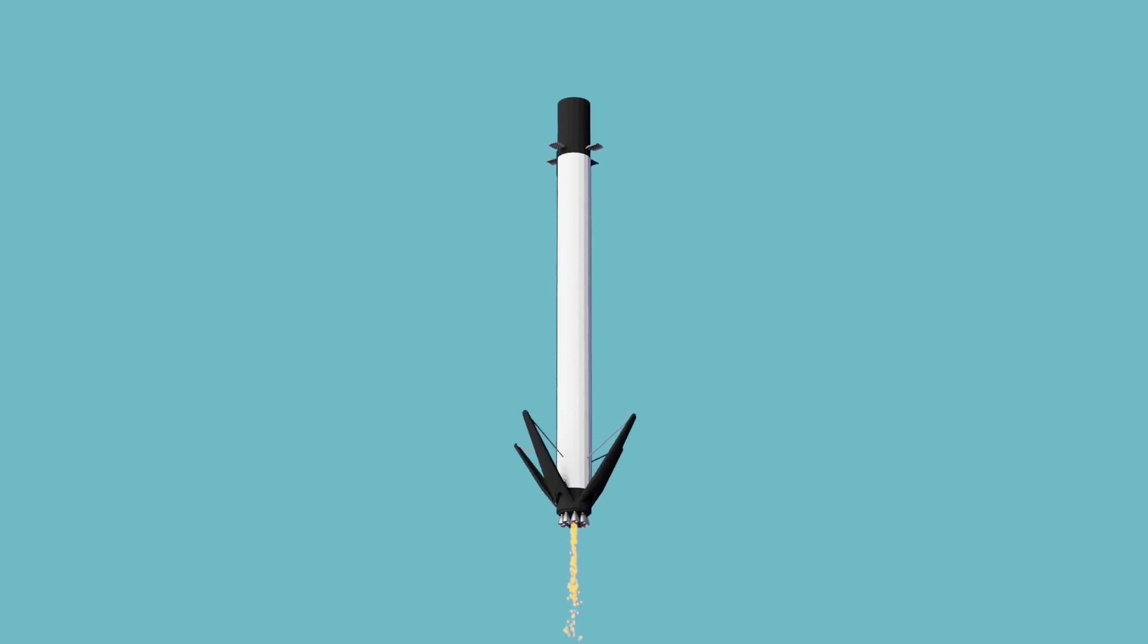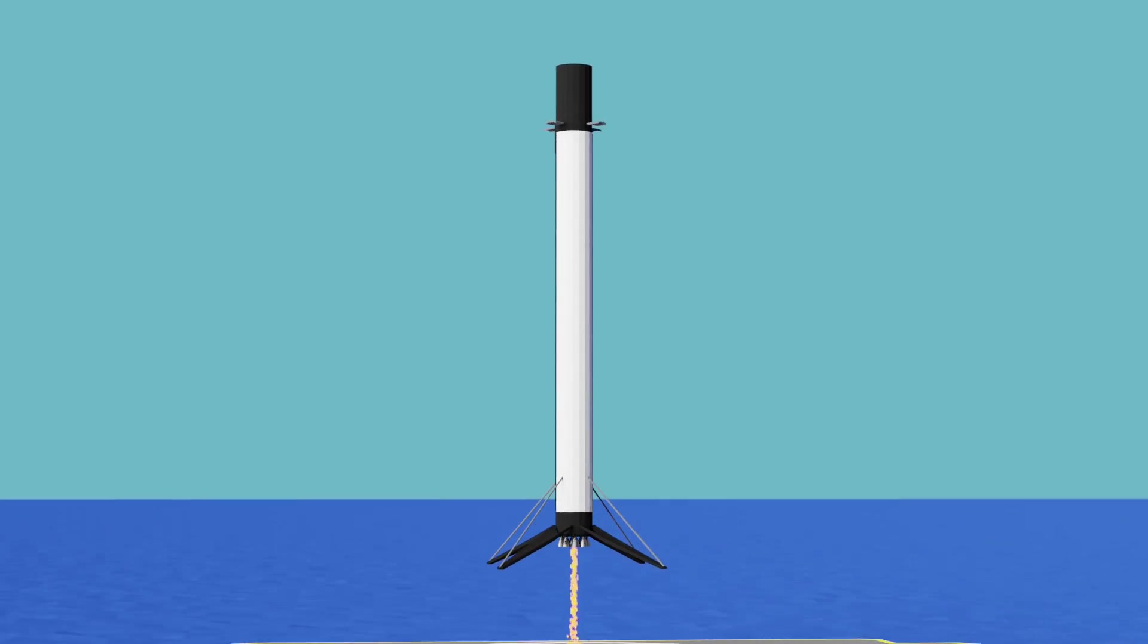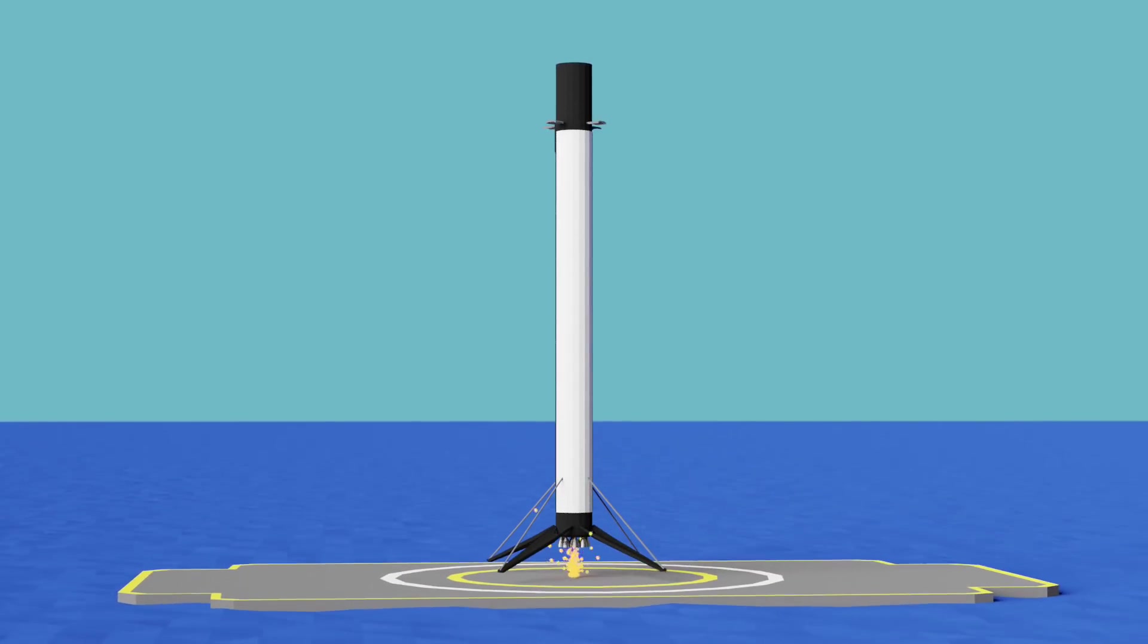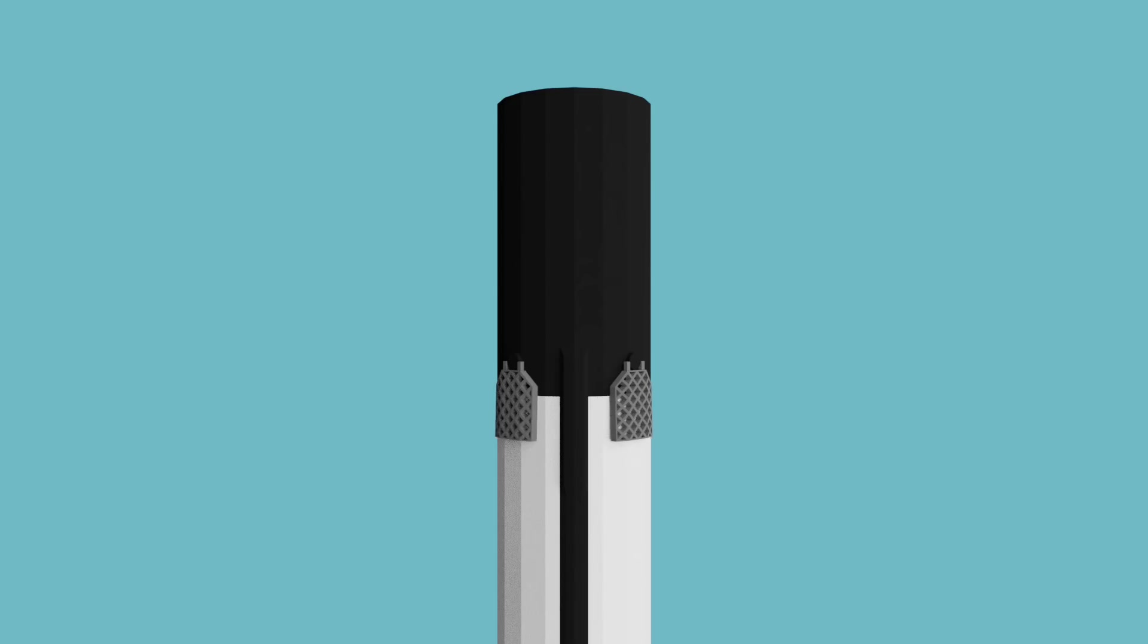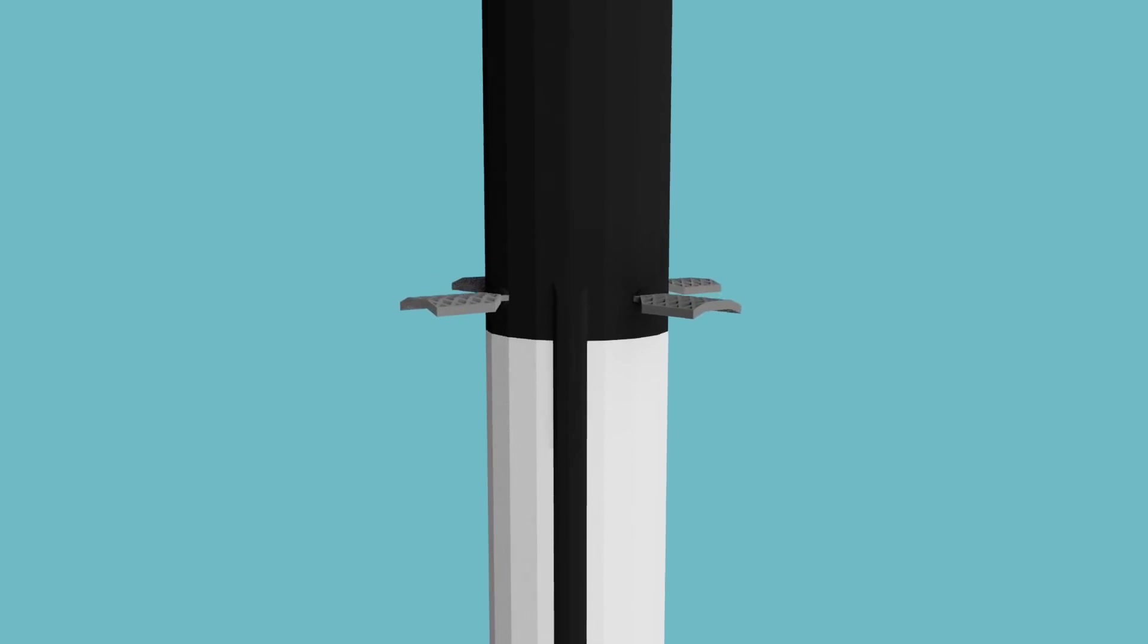This is true for the first stage of the SpaceX Falcon 9 rocket you can see here coming into a pinpoint landing. To guide itself to a landing like this, it has to precisely control its fall through the air. To do that, it uses these things here.